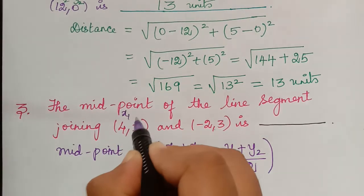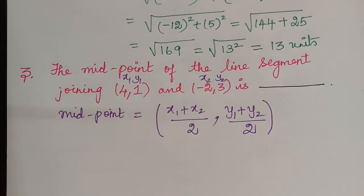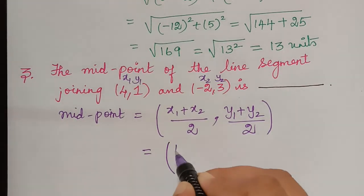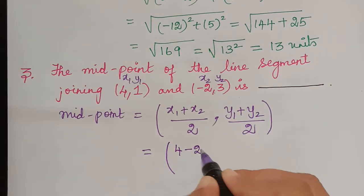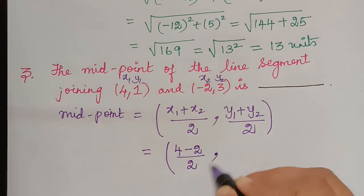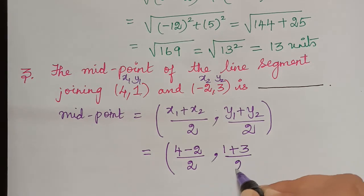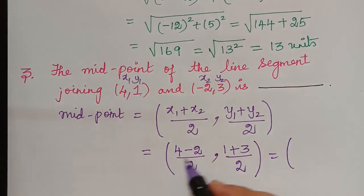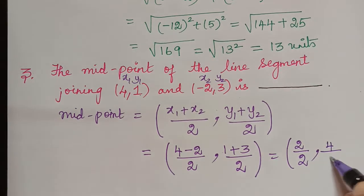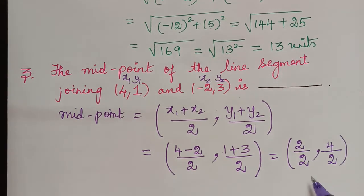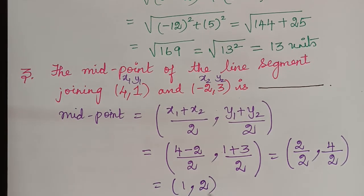Taking (4, 1) as x1 y1 and (-2, 3) as x2 y2, substituting in the formula gives: (4 plus (-2)) divided by 2, comma (1 plus 3) divided by 2. So that is (4 minus 2) divided by 2, comma 4 divided by 2, which equals 2 divided by 2, comma 4 divided by 2. Therefore the midpoint is equal to (1, 2).